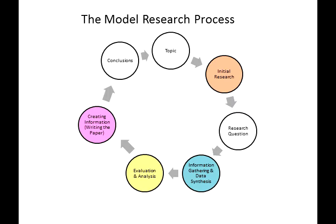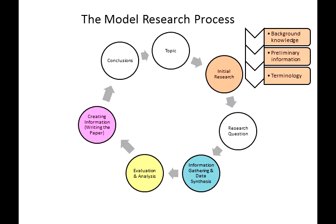We have an idea for a topic. We do initial research — what Badke calls gaining working knowledge of a topic. This includes our background knowledge, what we already know or think we know about the topic. We do some basic reading and general information sources to get a better understanding of our topic, and as a result, we learn some terminology — words and their meanings about this topic.